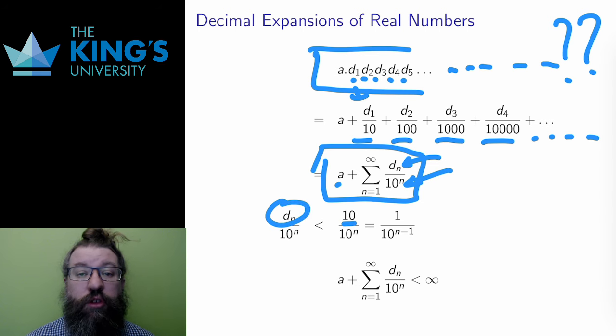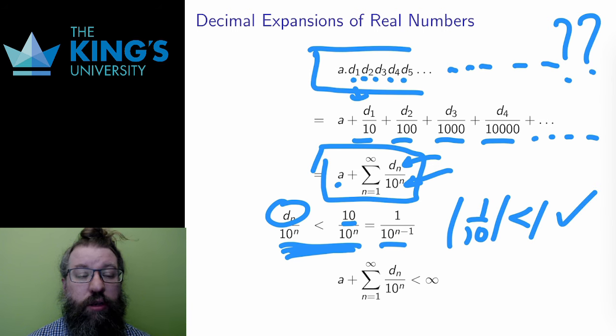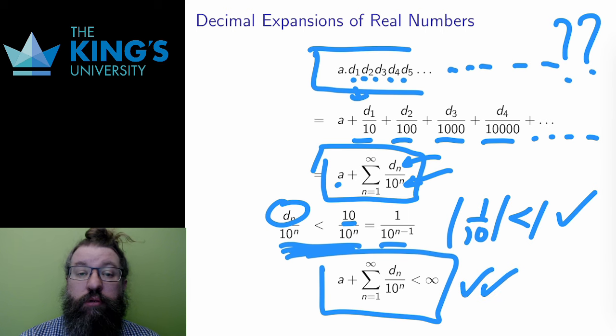Notably, the digits are all less than 10, so the terms of this sum are less than 10 over 10 to the n, which is the same as 1 over 10 to the n minus 1. And that's the terms of a geometric series with common ratio 1 over 10. Geometric series converge if the common ratio is absolute value less than 1, so this is a geometric series which converges. Therefore, all the decimal expansions of real numbers are convergent infinite series. Decimal expansions make sense. The infinite addition implicit in them will always sum to a finite number. Those series converge.